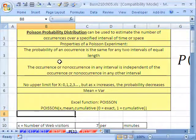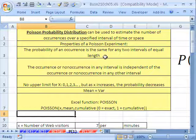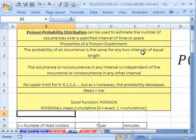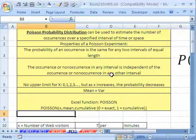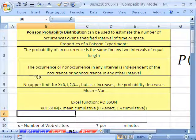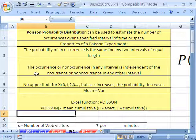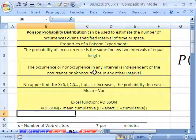Properties of a Poisson experiment: the probability of an occurrence is the same for any two intervals of equal length. So if we have 48 calls coming in one hour to a call center, the mean will be 48 calls for the next interval. The second property is the occurrence or non-occurrence in any interval is independent of the occurrence or non-occurrence in any other interval.